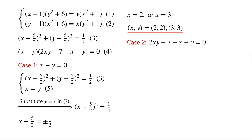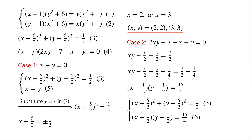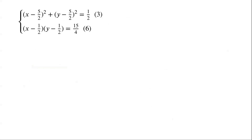Case 2: 2XY − 7 − X − Y = 0. Dividing the equation by 2 and rearranging, we have: XY − X/2 − Y/2 = 7/2. Adding 1/4 to both sides so we can factorize the left-hand side: XY − X/2 − Y/2 + 1/4 = (X − 1/2)(Y − 1/2), and 7/2 + 1/4 = 15/4. Now we have the system: (X − 5/2)² + (Y − 5/2)² = 1/2 (equation 3), and (X − 1/2)(Y − 1/2) = 15/4. Solving this system seems not straightforward, so we will use the substitution method.